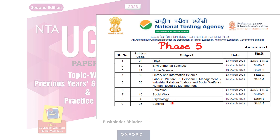For students whose exam is in Phase 5: Urdu, Environmental Science, Home Science, Library, and Labor Welfare are on 13th–14th March. Education will be conducted in two shifts (Shift 1 and 2), along with Social Work, Psychology, and Sanskrit. Phase 5 students can now check their examination city center slip on the NTA website.